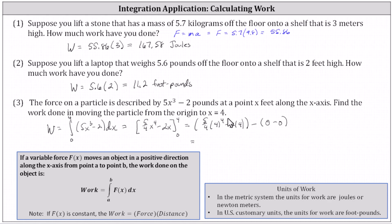Simplifying, (5/4) times four to the fourth is equal to 320 minus two times four, which is eight. The work is equal to 312 foot-pounds. I hope you found this helpful.